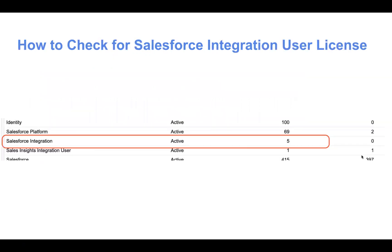How can you check whether your Salesforce org has integration user licenses available? You can log into your Salesforce org, go to Setup, then go to Company Information. In the licenses list, you'll find a separate line item for Salesforce Integration. Here is a snapshot from my org where I can see five licenses which are readily available.